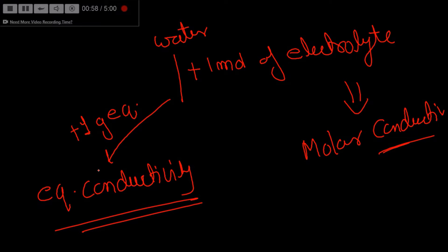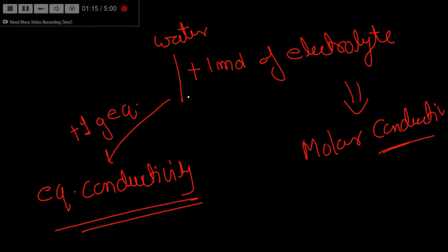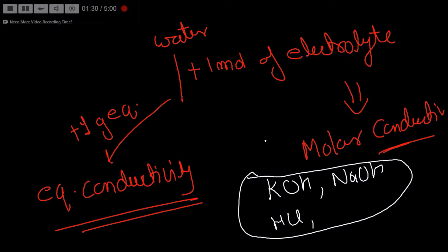To be clear: whenever one mole of an electrolyte is present in any solution, the conductivity of that solution is called molar conductivity. Whenever one gram equivalent is present, it is known as equivalent conductivity. An example where molar conductivity equals equivalent conductivity includes KOH, NaOH, HCl, and many more — all those for which the n-factor is 1, meaning molar mass equals equivalent mass.